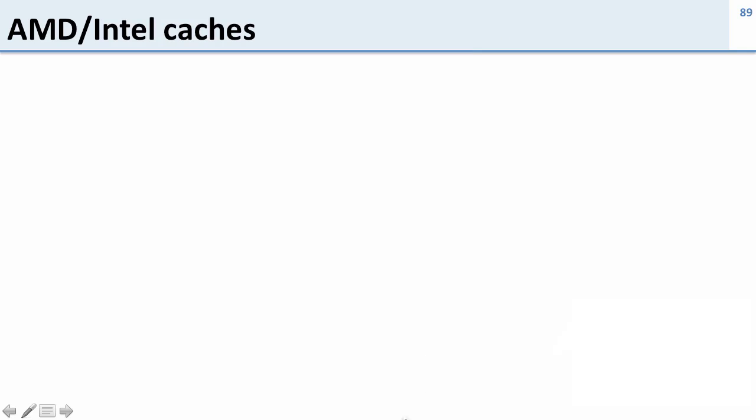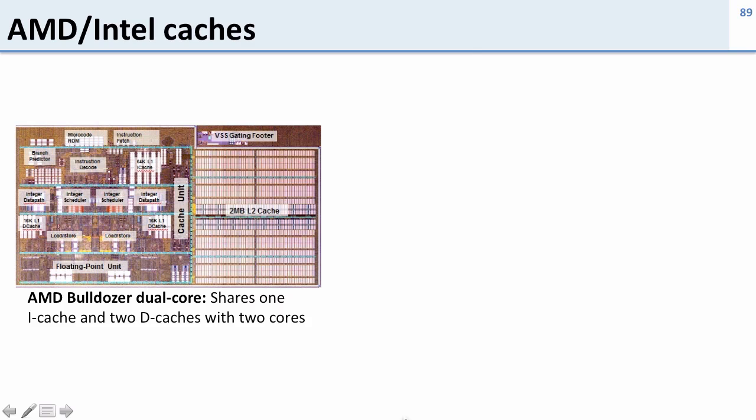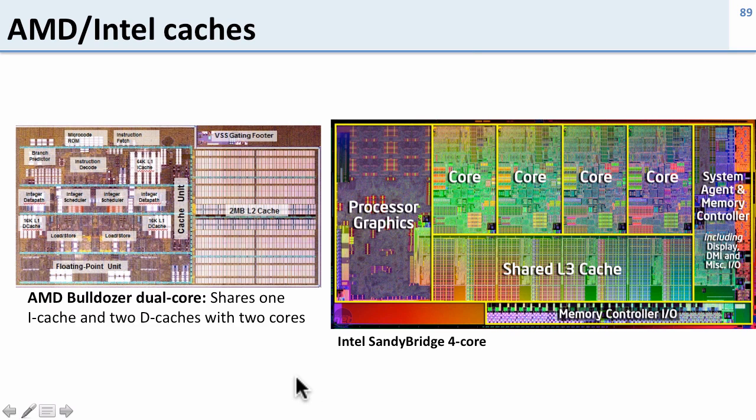So let's take a look at what caches really look like in processors. Here's AMD's Bulldozer dual core, and here's Intel's Sandy Bridge which has four cores. Both of these have these big caches here, these yellow ones. These are both data and instruction caches.